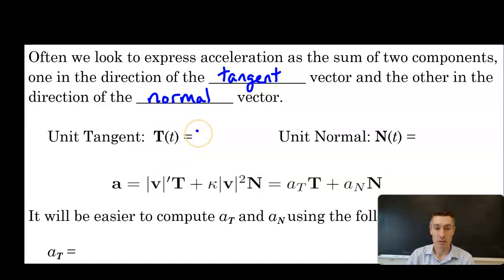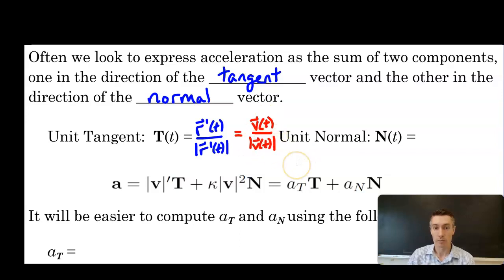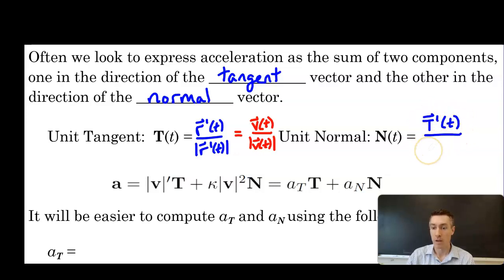To do that, we'll use the unit tangent and unit normal vectors. Since unit means magnitude of one, these vectors will only contribute direction. The unit tangent vector is defined as r prime of t over the magnitude of r prime of t — translating into velocity and acceleration, this is the velocity over the magnitude of velocity.